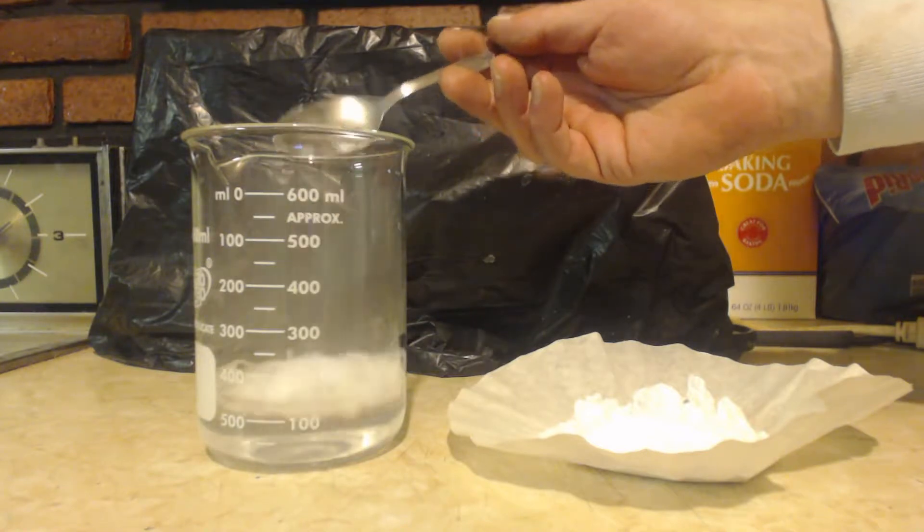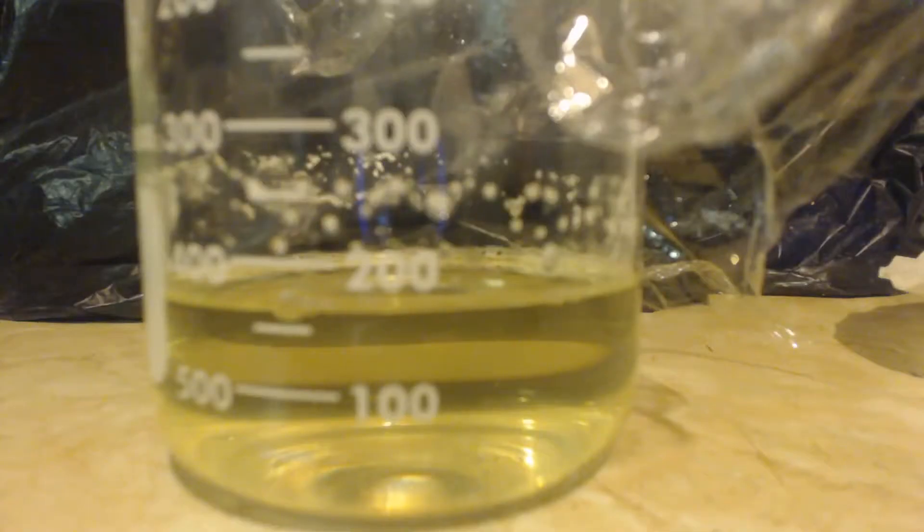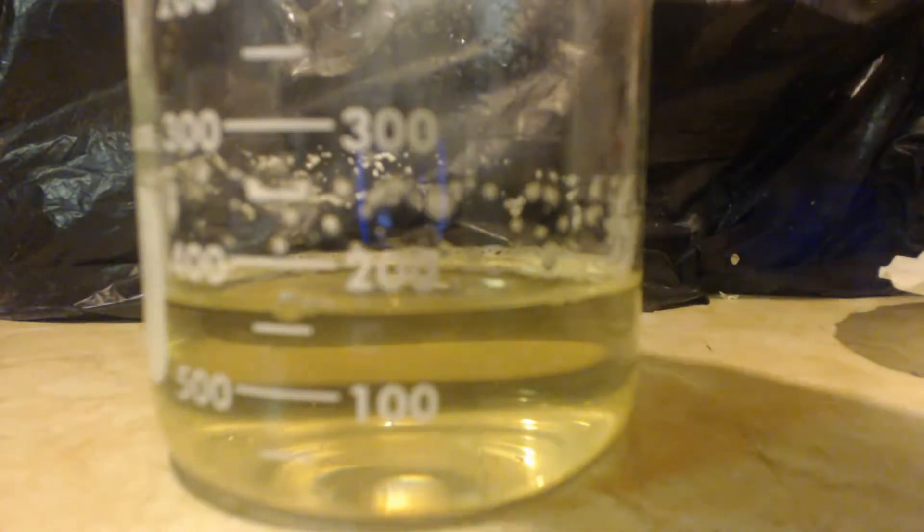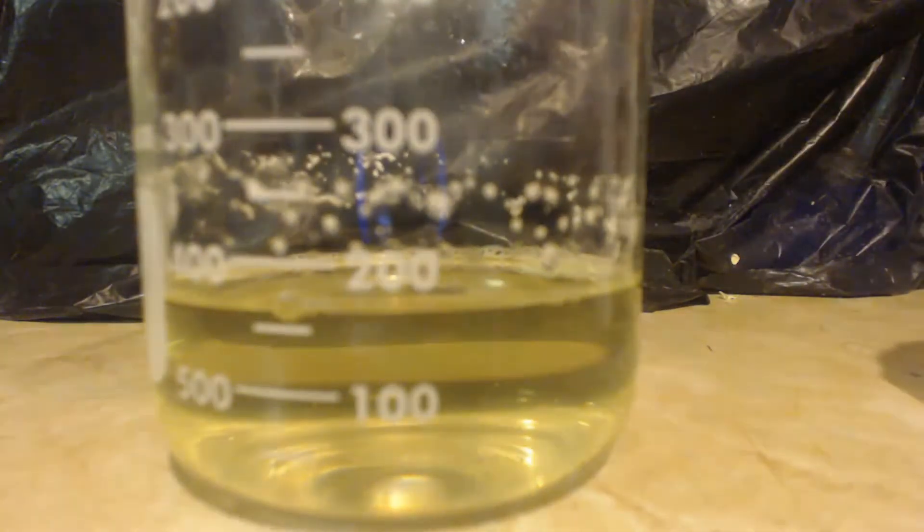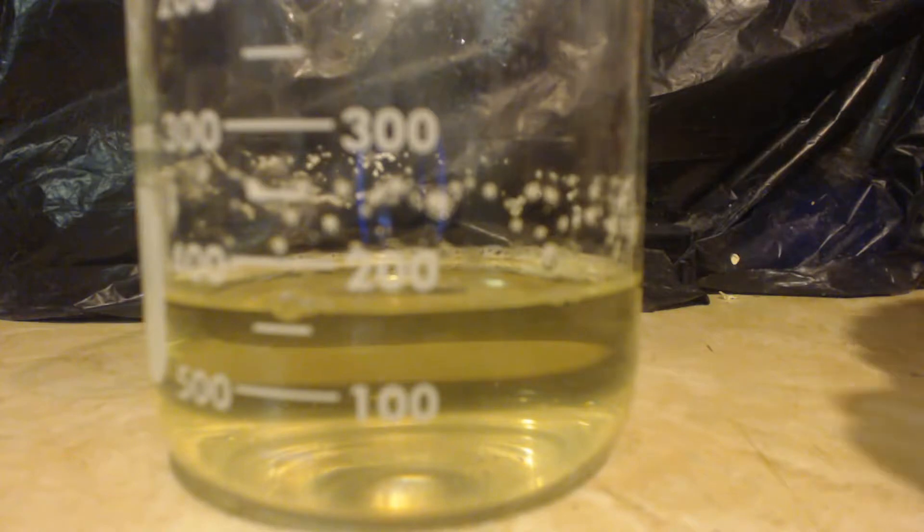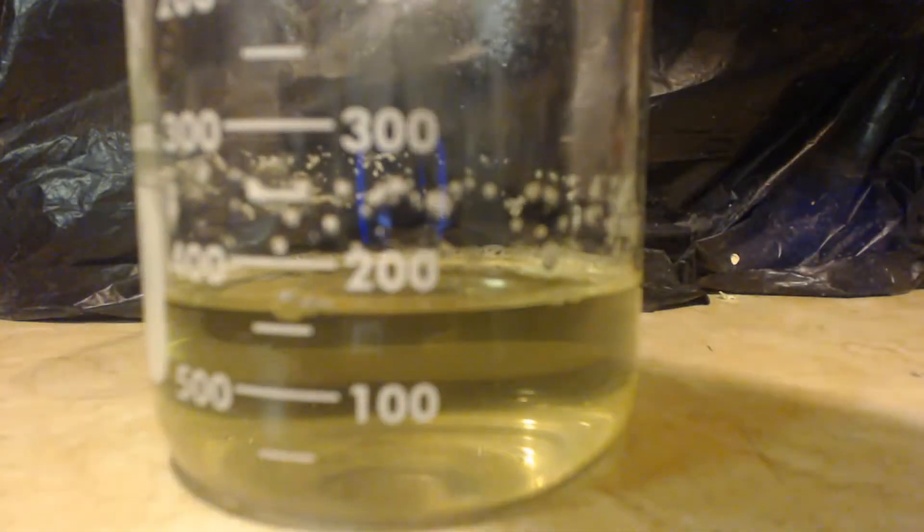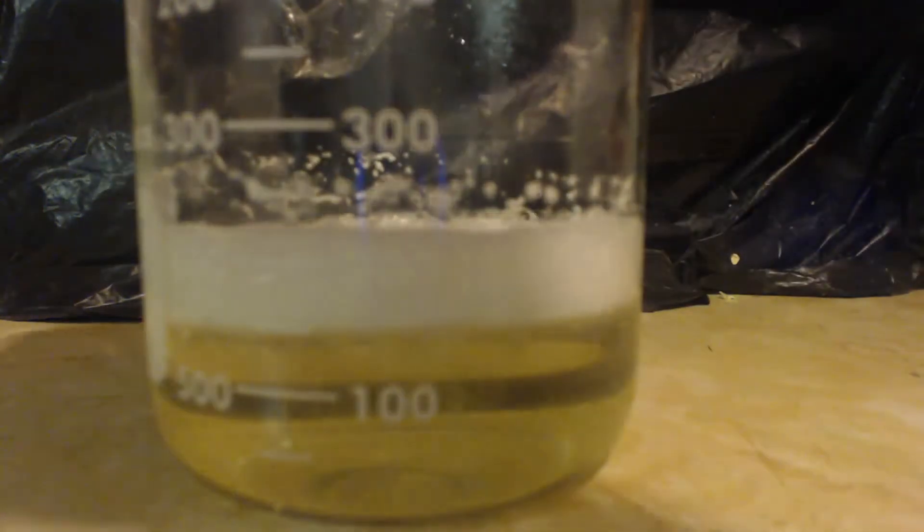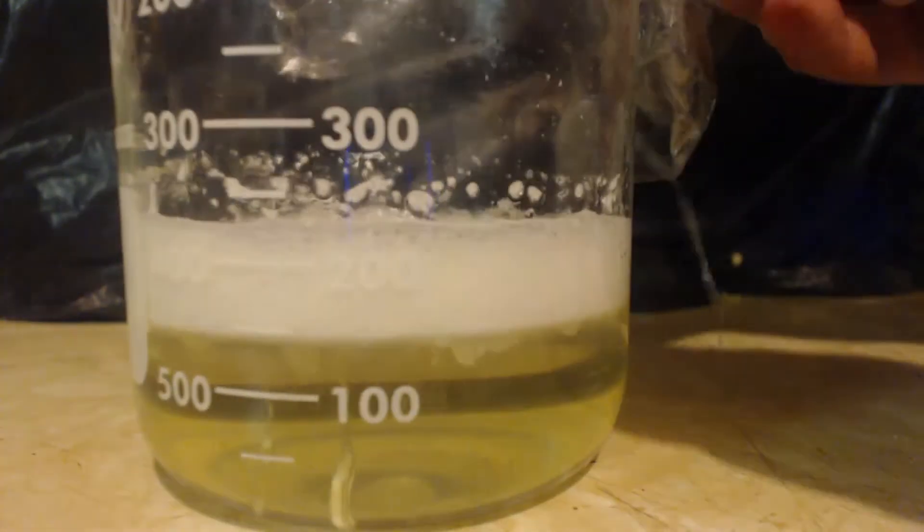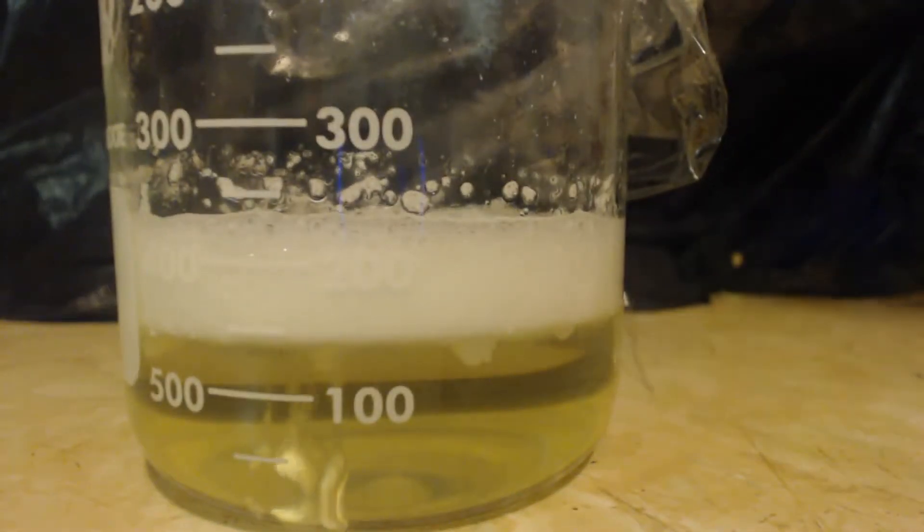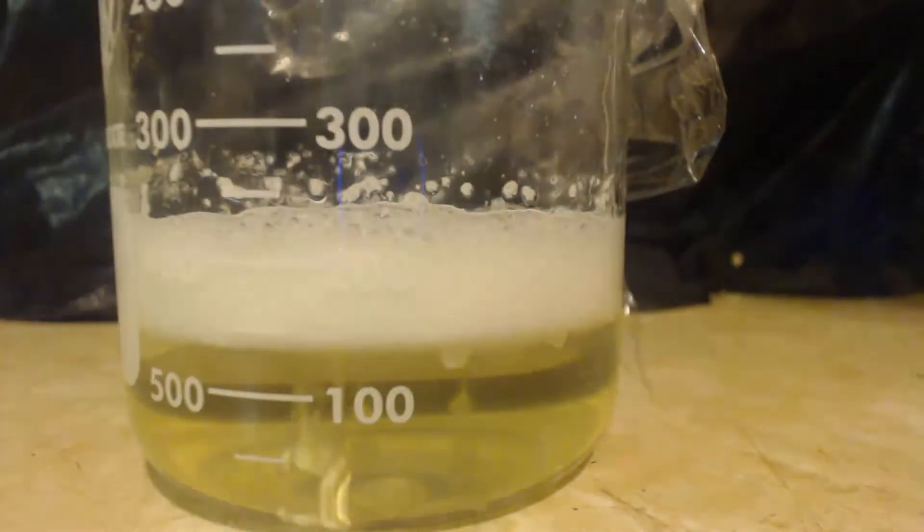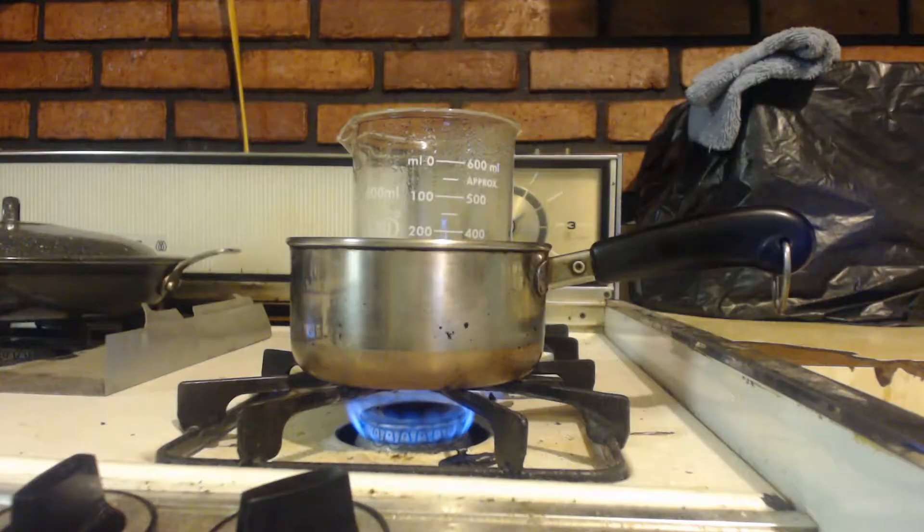I want you to notice two things. One is the color—look, it turned yellow, so there is impurity. Two is this is the last little bit of stuff I'm going to toss in. You can see it's still vigorously fizzing, so there's definitely too much HCl, which is good as we can evaporate that away.